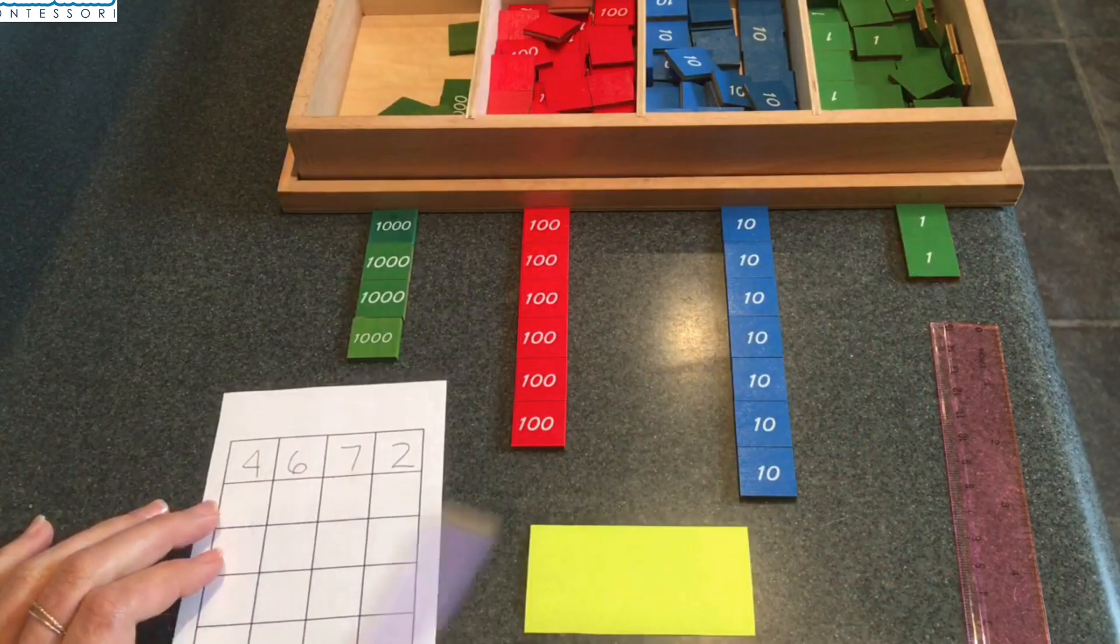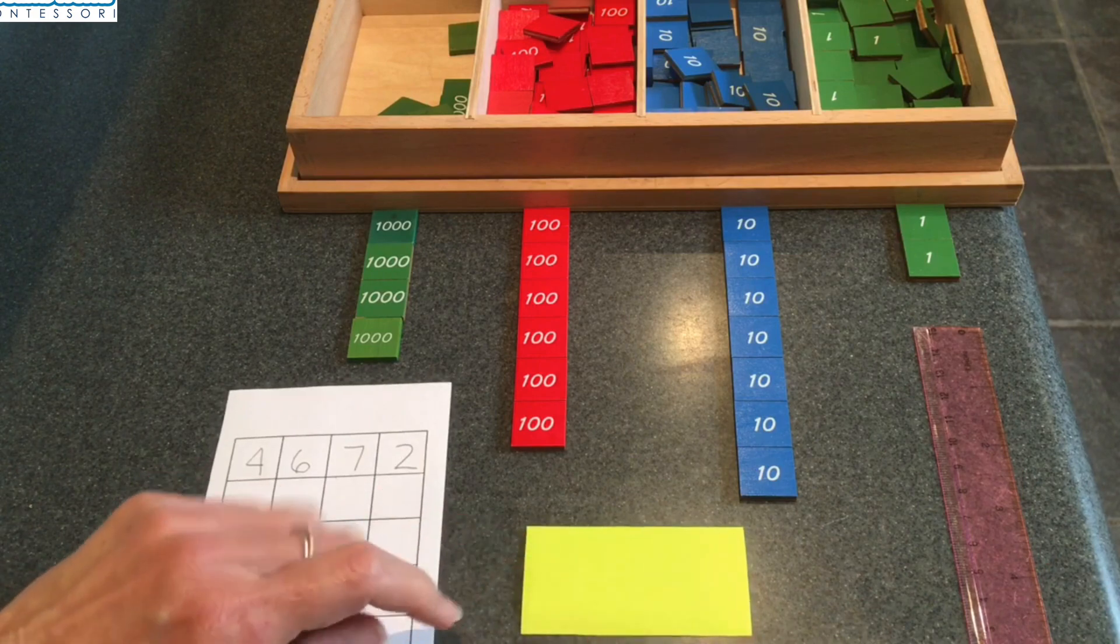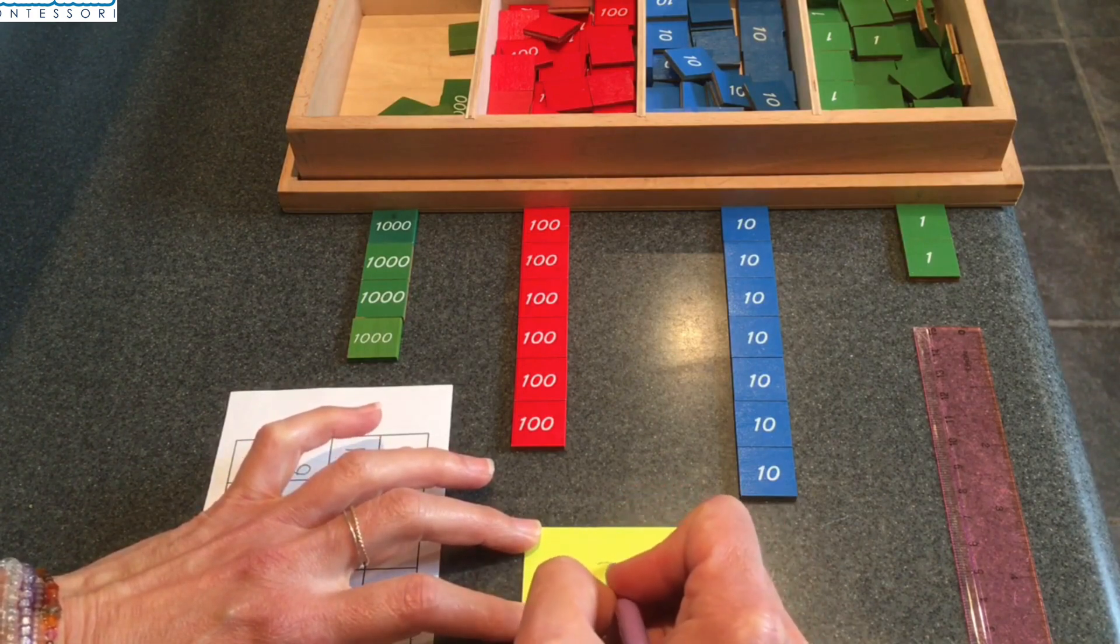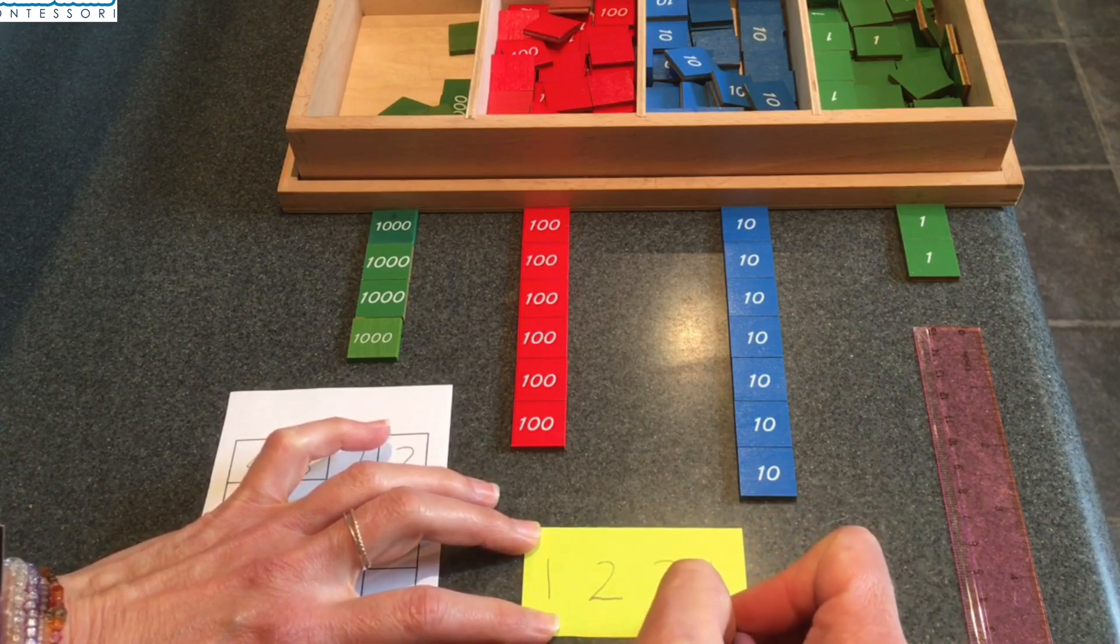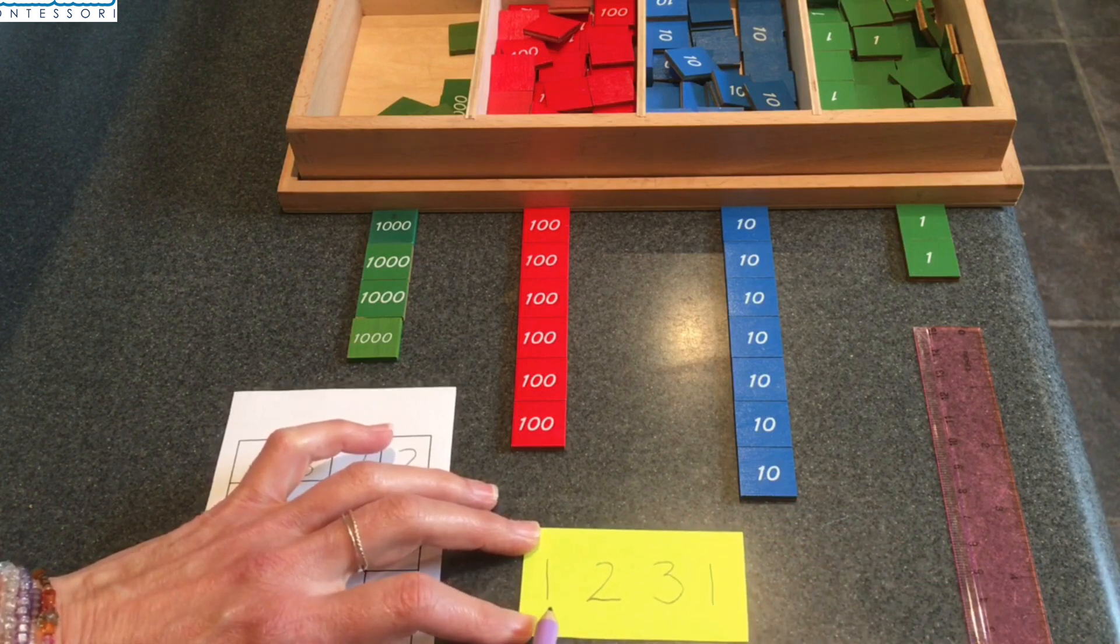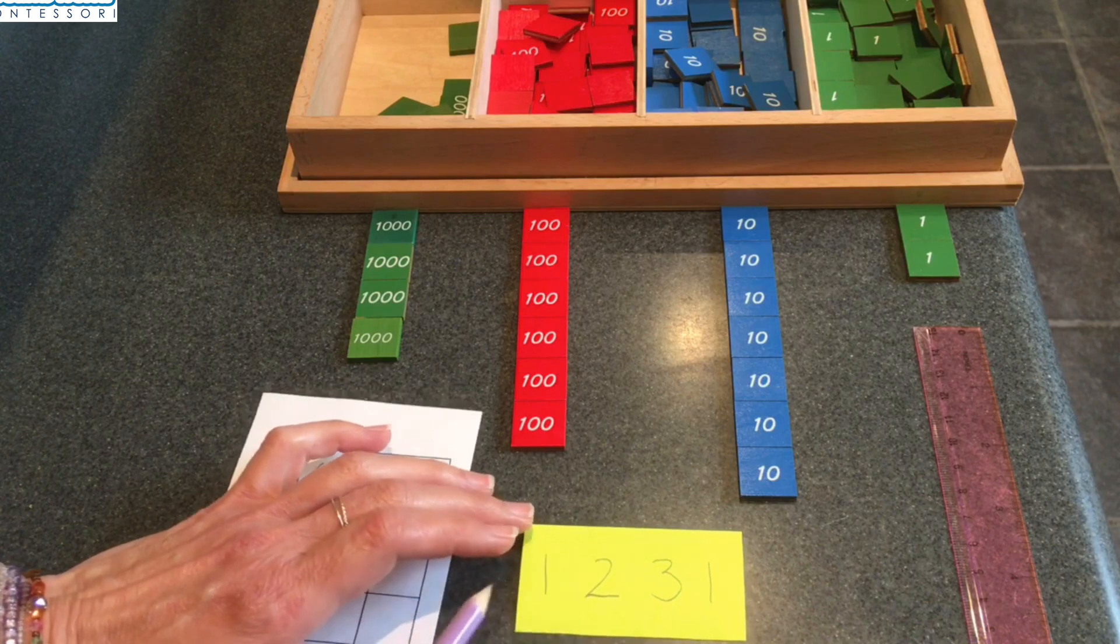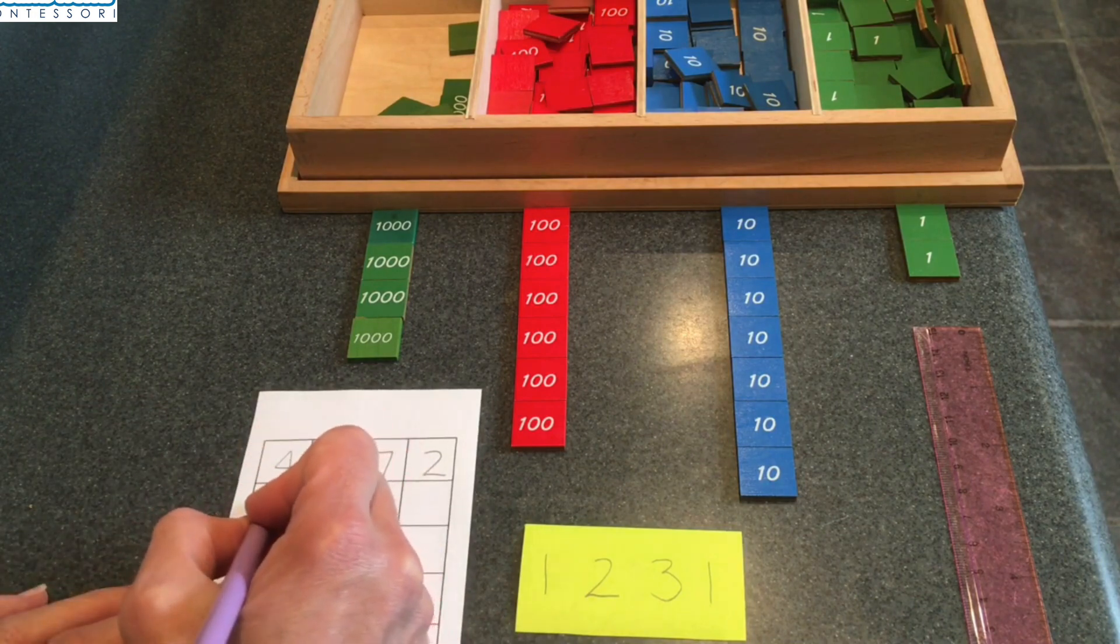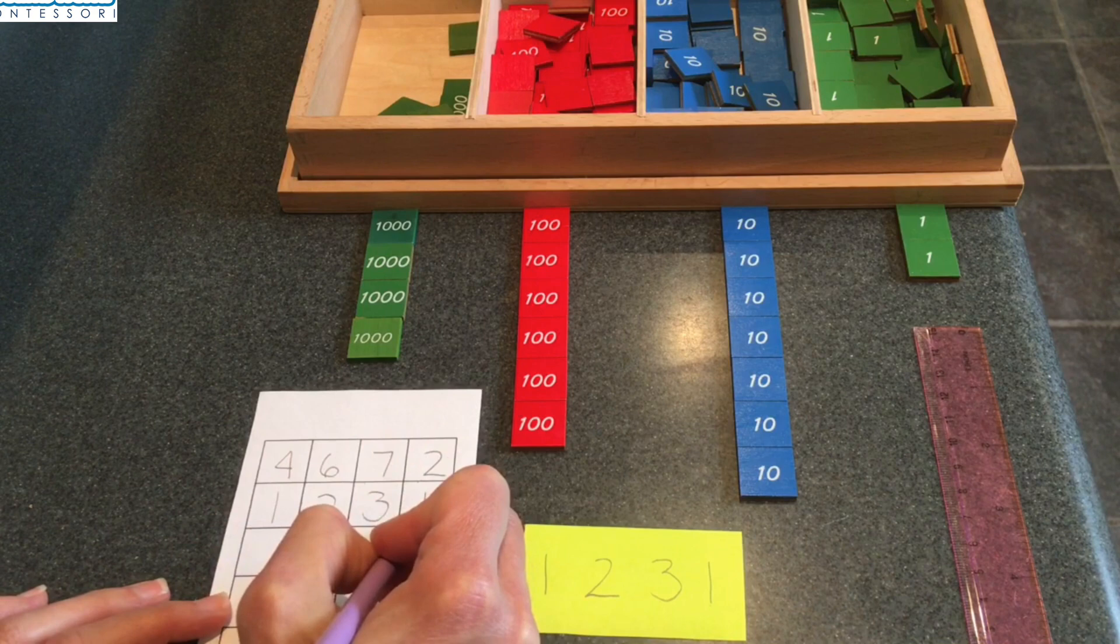You have it at home too. So we're going to write another quantity, the quantity that we want to take away. I'm going to write it on this half of a post-it. I'm going to write 1,231. Can you write 1,231 on your half of a post-it? Great. Now I'm going to write it on my grid paper too. Let's do that together. One thousand, two hundred, three tens, and one unit.